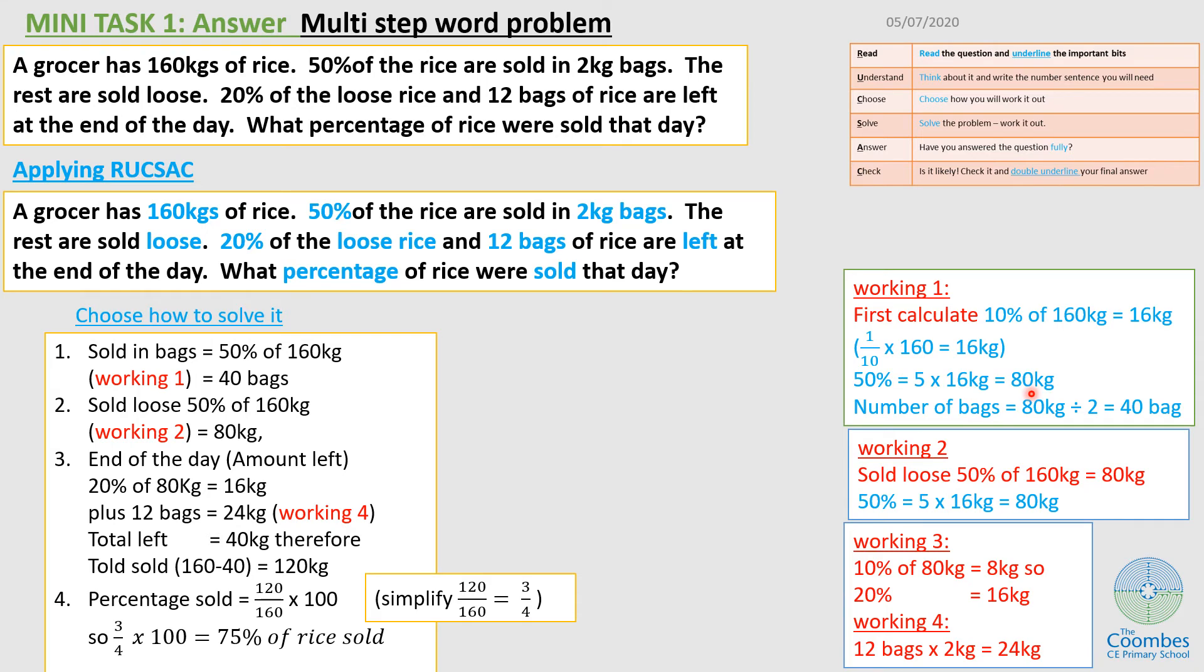Now, I know that 80 kg were put in bags and each bag was 2 kg. So to find the number of bags, I have to divide the 80 by 2. So 80 divided by 2, actually the grocer had 40 bags. So amount sold in bags were 40 bags.